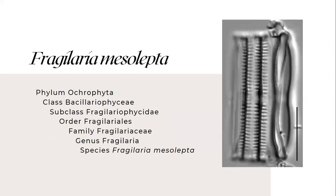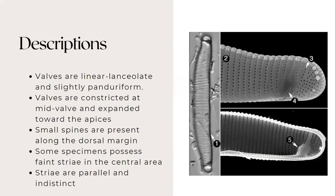Next species is the Fragilaria mesolepta. This species belongs to the family Fragilariaceae. For its description, valves are linear lanceolate and slightly panduriform. Valves are constricted at the mid valve and expanded towards the apices. Small spines are present along the dorsal margin and some specimens possess faint striae in the central area.